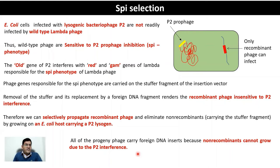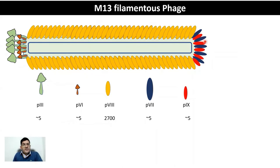In many experiments you require single-stranded DNA, specifically when you're synthesizing a probe or you're doing Maxam-Gilbert sequencing. Here I show you a typical M13 phage vector, also known as a filamentous phage M13. There is a single-stranded DNA surrounded by a protein coat.